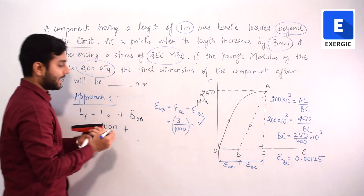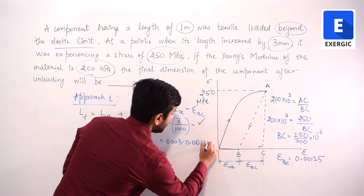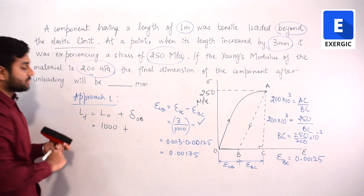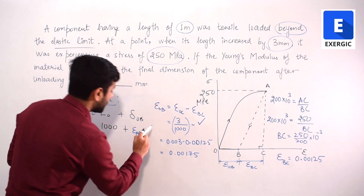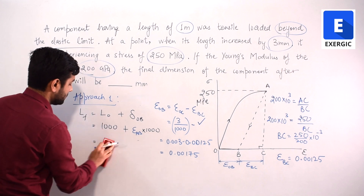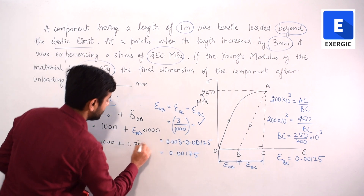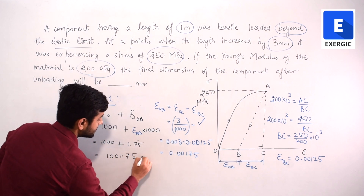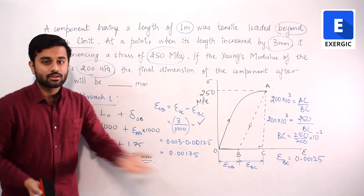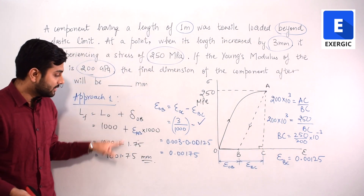Subtracting: strain OB equals 0.003 minus 0.00125, giving the permanent strain. Multiplying by the original length of 1000 mm gives the permanent deformation. Adding this to the initial 1000 mm gives a final answer of 1001.75 mm. If we had used the original value of 300 GPa for Young's modulus, only this strain value would change, giving a different numerical answer.